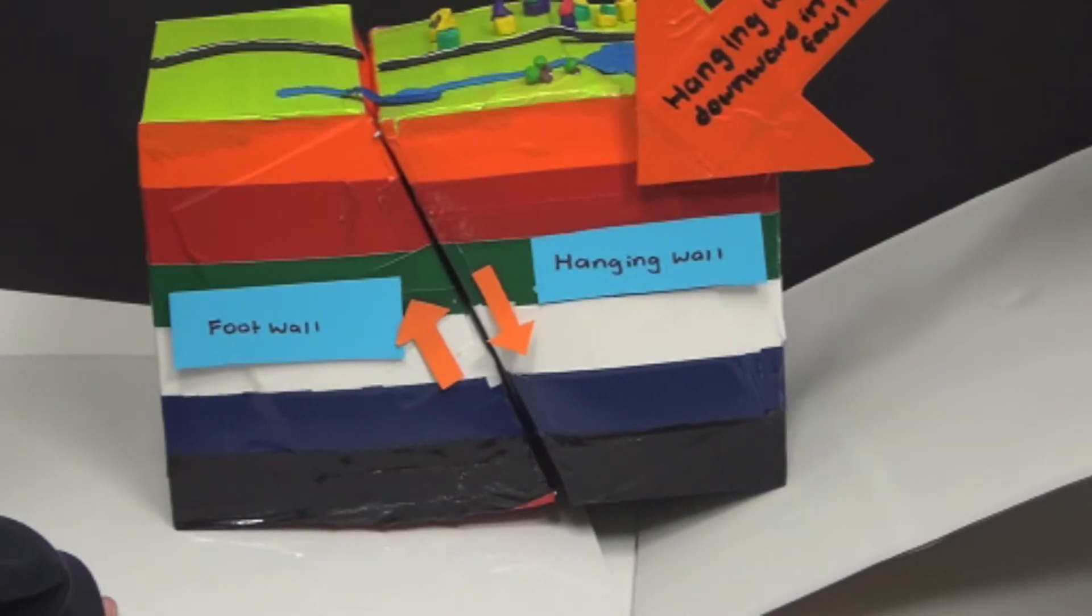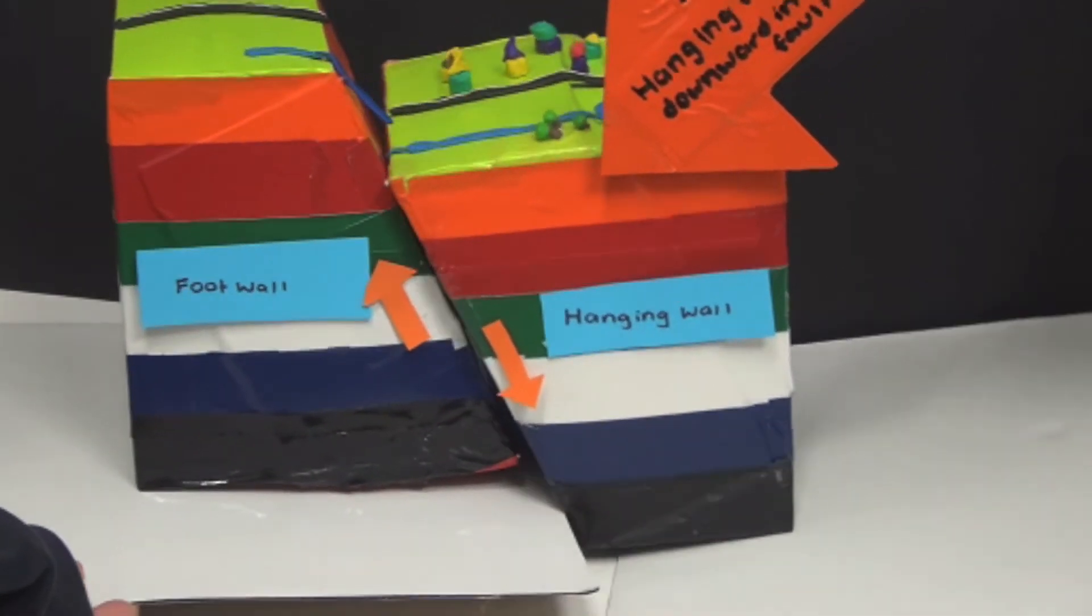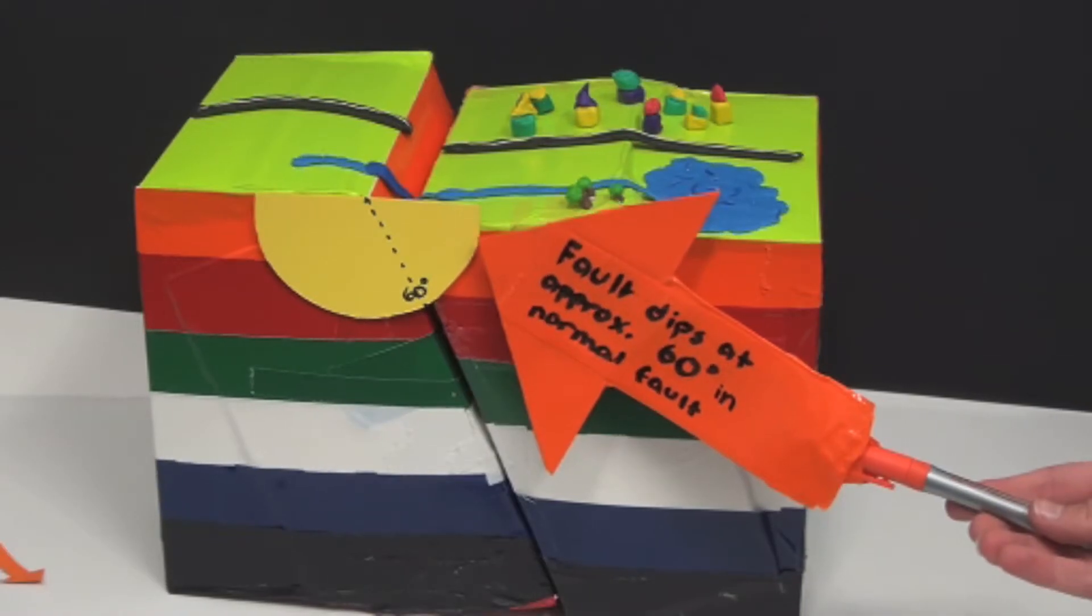In normal faults the hanging wall moves down. The fault dips at approximately 60 degrees to the horizontal.